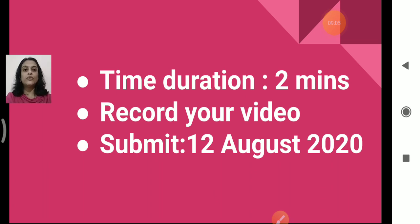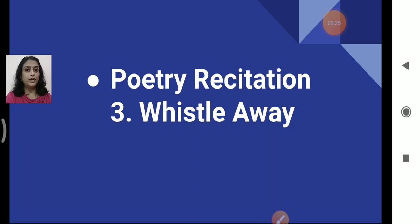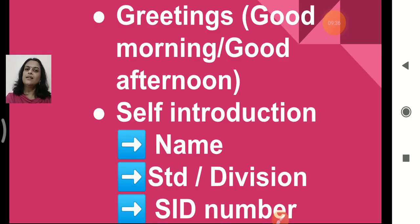Now let's move ahead to the second one — that is poetry recitation. Which poem is there for your assessment? It is number 3, Whistle Away. You have to recite this poem. And you have to recite the full poem — not only one stanza or a few lines, but the full poem.